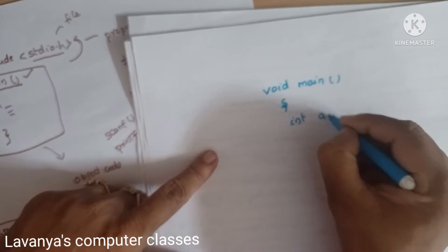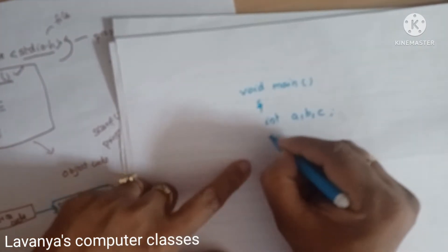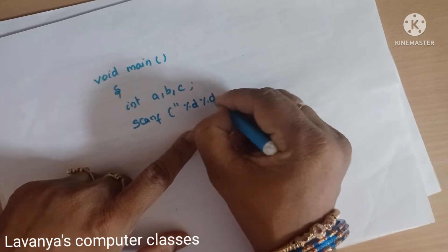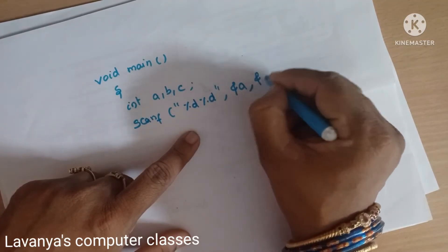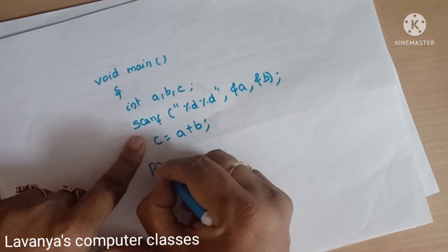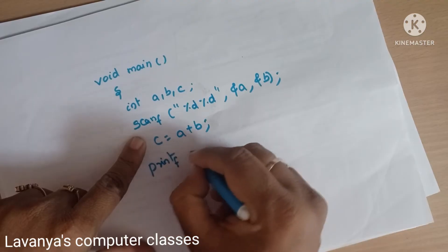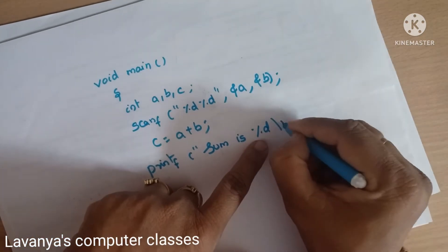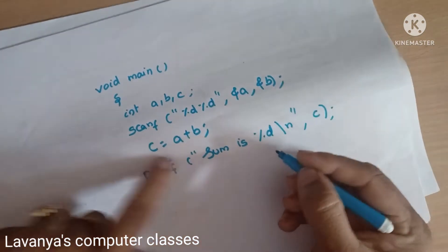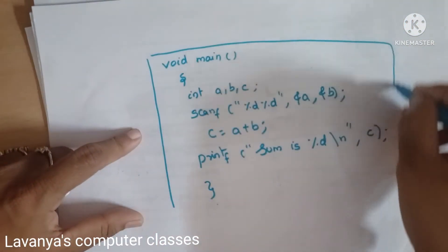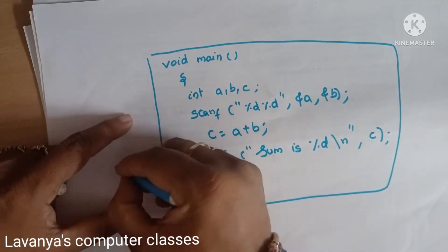Here is a simple example: a sum of two numbers program. The program has void main, with integer variables a, b, c. It uses scanf to read two numbers, computes c = a + b, and uses printf to print the sum. This program file is called sum.c.